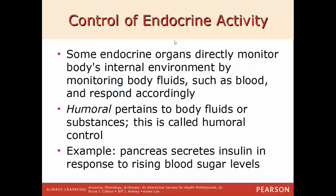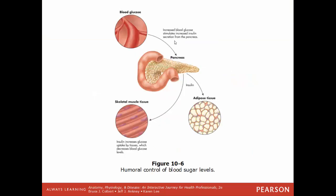Some endocrine organs directly monitor the body's internal environment — body fluids and blood — and respond accordingly. This is called humoral control; 'humoral' always refers to body fluids in anatomy. A good example is the pancreas: when blood sugar levels rise, that presence stimulates the pancreas to release insulin, which then stimulates uptake of glucose by skeletal muscle or storage into fat, bringing blood sugar back down.